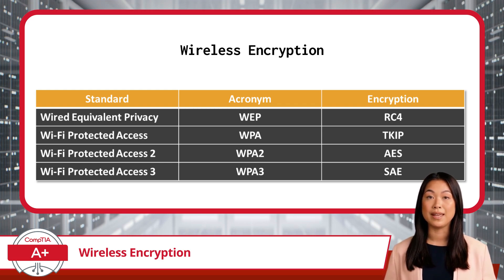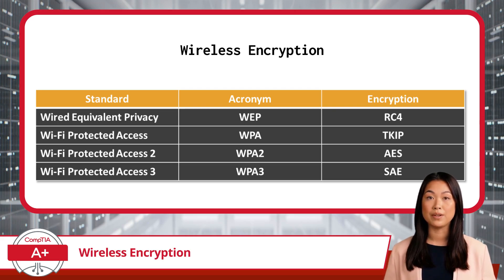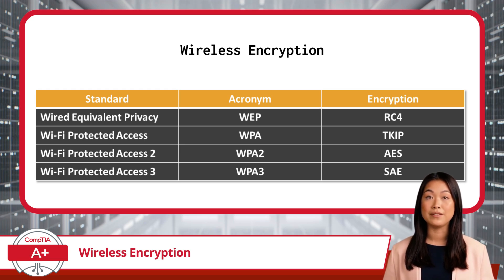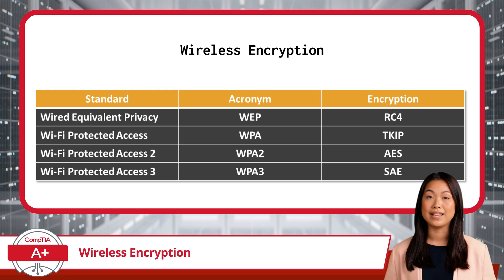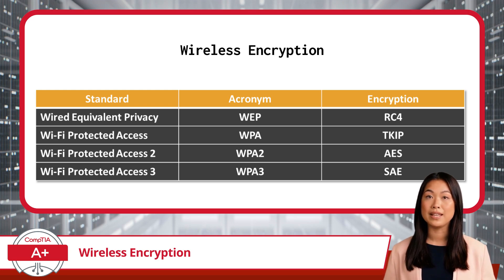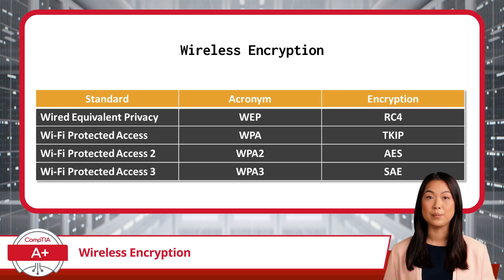Wired Equivalent Privacy, or WEP, was the original standard, designed to make wireless networks as secure as their wired counterparts. However, WEP quickly became infamous for its vulnerabilities. Using the RC-4 stream cipher, WEP's biggest flaw was its use of static encryption keys that were too short, making it an easy target for hackers. With freely available tools, even a beginner could crack a WEP key in a matter of minutes, rendering any wireless network relying on it highly insecure.